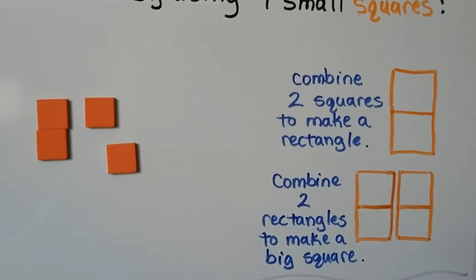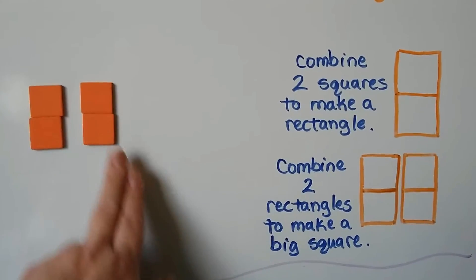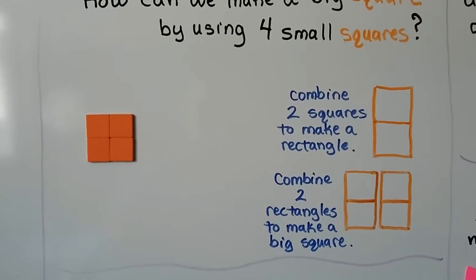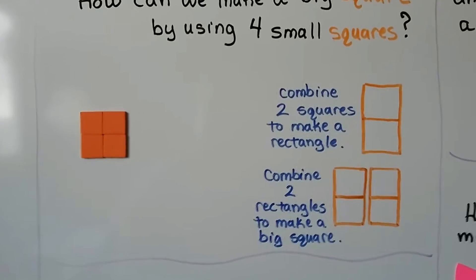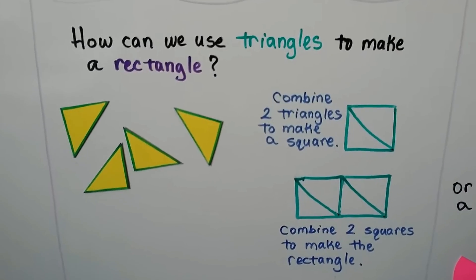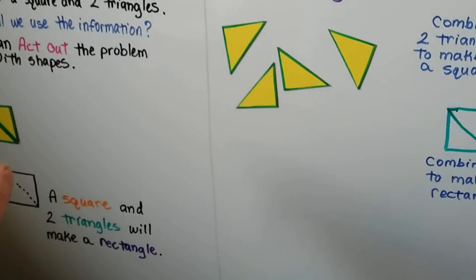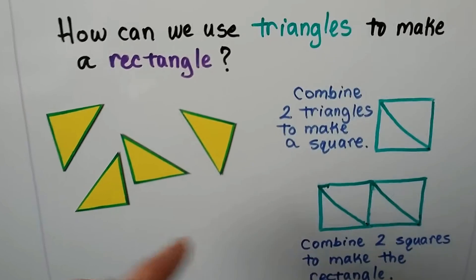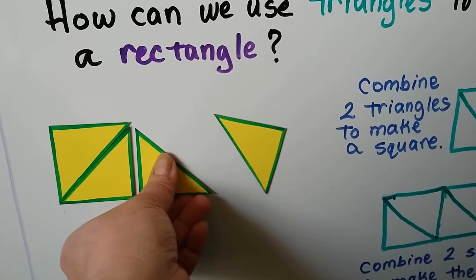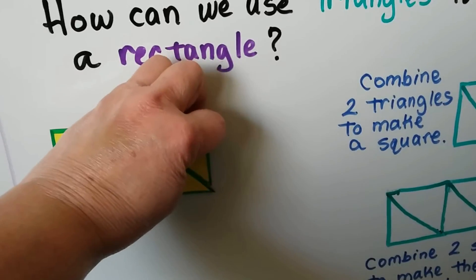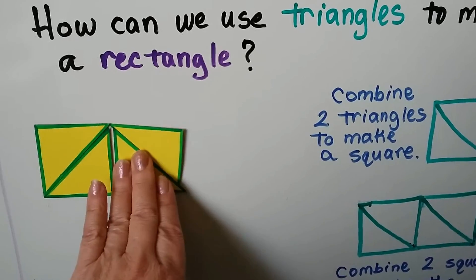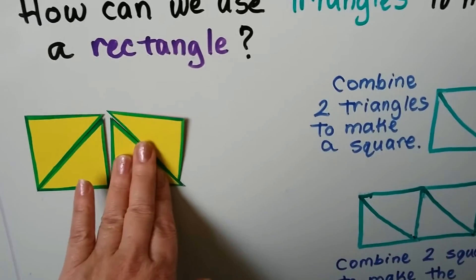We have four squares — or you could look at it as two rectangles — but they make a bigger square. How can we use triangles to make a rectangle? If you remember, two triangles make a square. We can do it two times: make a square, then make another square and put them together to make a rectangle.